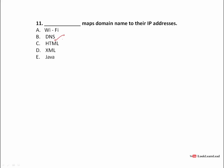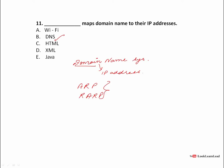Next: dash maps domain name into IP address. It is DNS — Domain Name System. DNS maps domain names to IP addresses. There are also related terms such as ARP and RARP which we will see in the next videos. The answer is DNS.